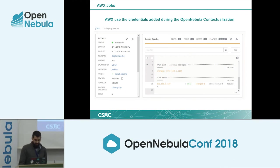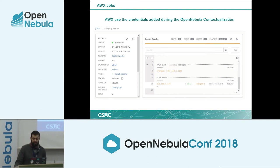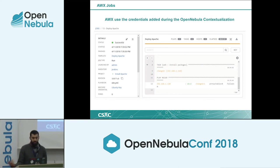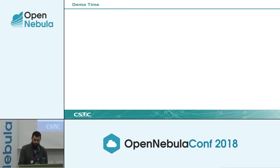These are the same Ansible logs but viewed from AWX instead of Jenkins. It's interesting to see that all actions are logged, so it could be useful to trace back if something goes wrong.